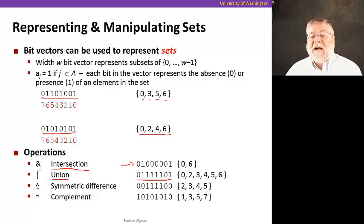Exclusive or corresponds to what's called the symmetric difference. In other words, elements that are in one set, but not both. In this case, the elements two, three, four, and five. And a complement is obviously the complementary set. So the complement of the first one, of the second set here, is one, three, five, and seven.